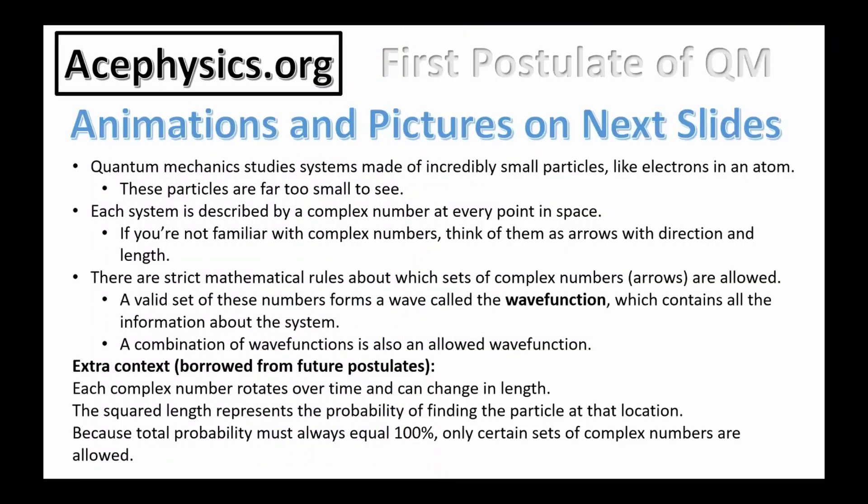Quantum mechanics studies systems made of incredibly small particles, like electrons in an atom. These particles are far too small to see. Each system is described by a complex number at every point in space.